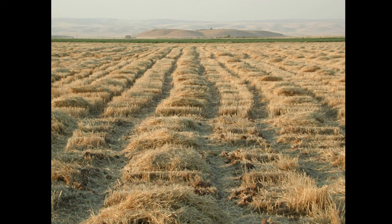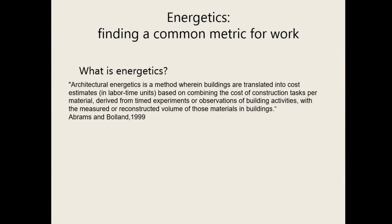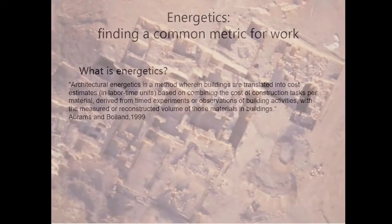This is the site of Tell Mozan in northeastern Syria, third and second millennium BC. It's an archaeological site which was a city — actually several cities one on top of each other. The question is: apart from saying it's really big and really important, what are the parameters we can use to discuss whether this is a city or not? What I'm proposing is to use energetics. Architectural energetics is a method wherein buildings are translated into cost estimates in terms of labor time units, based on combining the cost of construction tasks per material — derived from timed experiments or observations of building activities — with the measured or reconstructed volume of those materials in the buildings.